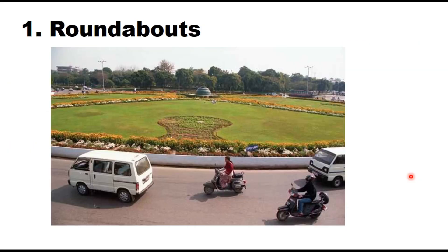The first type is roundabouts. IRC 65 talks about the design and capacity of roundabouts. These are considered to be the safest type of intersections because crossing is completely eliminated. All vehicles are forced to move around a central island, so crossings are converted into merging and diverging movements. They are important at intersections when the right turn is heavy or the number of approaches is more than four, but they have a limited capacity to handle traffic.